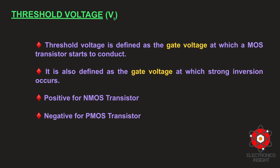The value of threshold voltage depends on various parameters. Some of these parameters are gate material doping, gate material channel doping, the thickness of silicon dioxide, the impurities at the silicon-insulator interface, and the voltage between source and substrate. Now we will move on to the main topic: the different modes of operation involved in a MOS transistor.